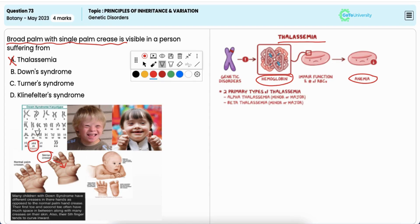Option C, Turner syndrome: It is incorrect. Turner syndrome affects females where one X chromosome is missing or partially missing. It is characterized by features such as short stature and webbed neck, but not a single palm crease.